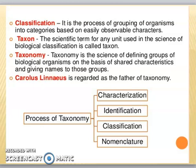Carolus Linnaeus is called the father of taxonomy. Taxonomy is the science of defining groups of biological organisms on the basis of shared characteristics and giving names to those groups. The whole process of taxonomy involves characterization — identifying different characters — then identification, classification, and finally nomenclature.